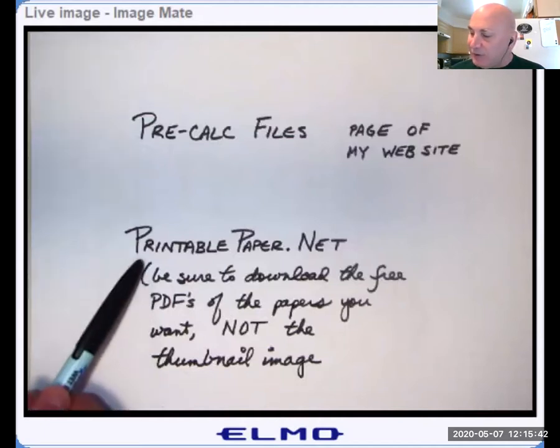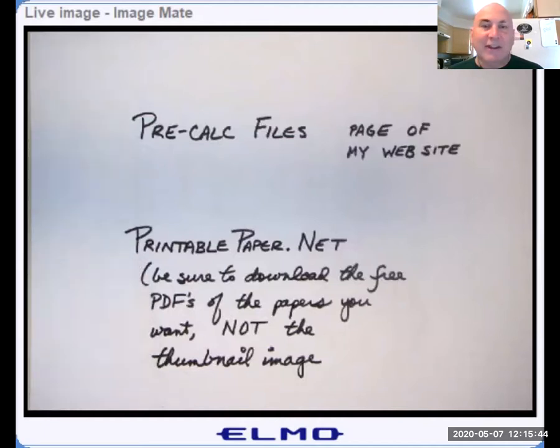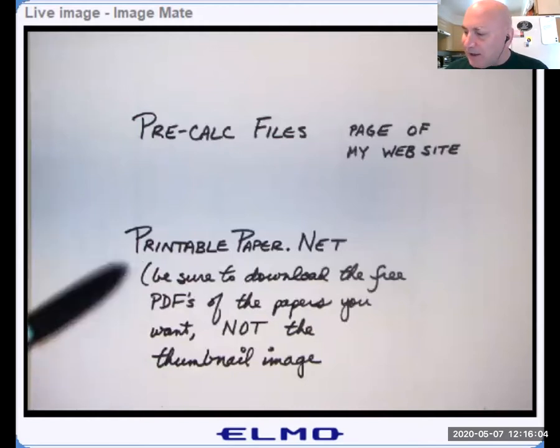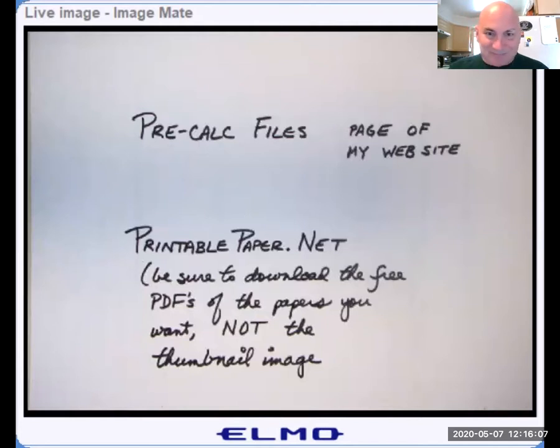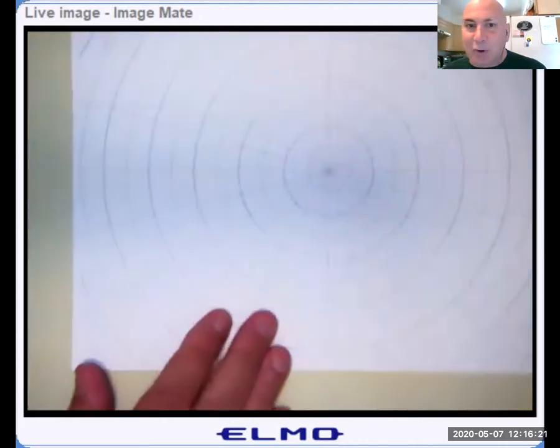I got that PDF from printablepaper.net. They have more types of paper there than you can imagine. Music paper, calligraphy paper. I'm just drawing a blank here. There was something for sewing or knitting or something. Just anything you can imagine. Calendars. Go to printablepaper.net and, of course, read that notice. You want to make sure you download the PDF, not just the thumbnail view that lets you look at what the PDF contains. So having done that, let's get started on some polar coordinates.